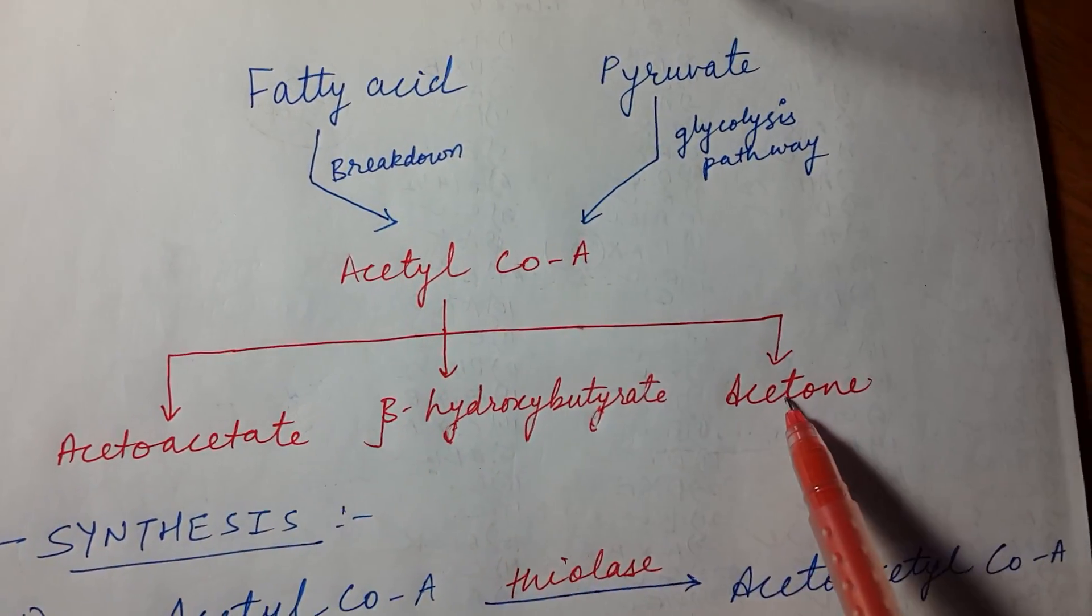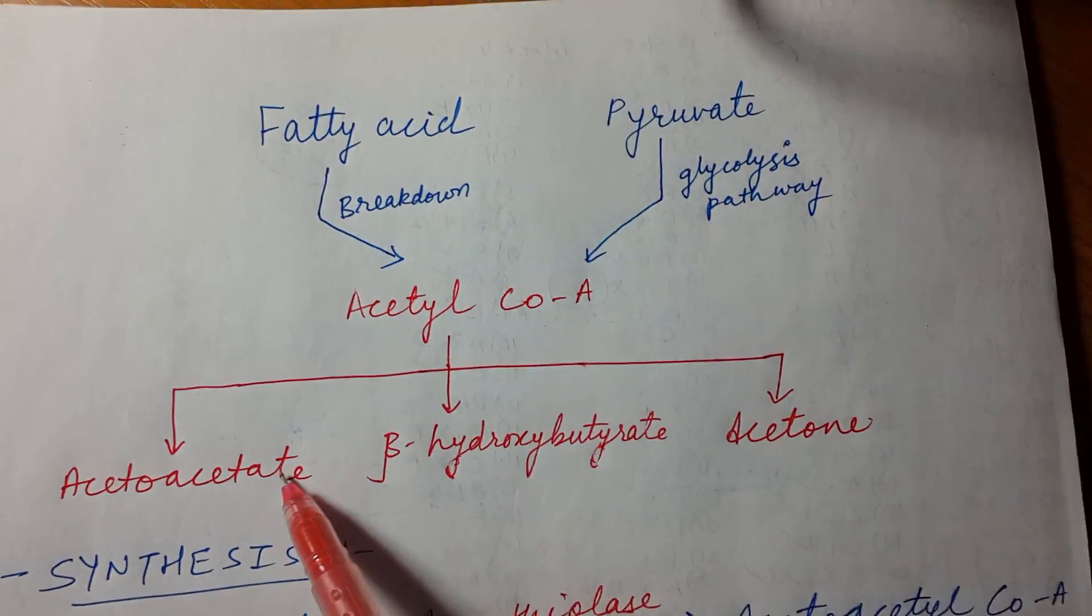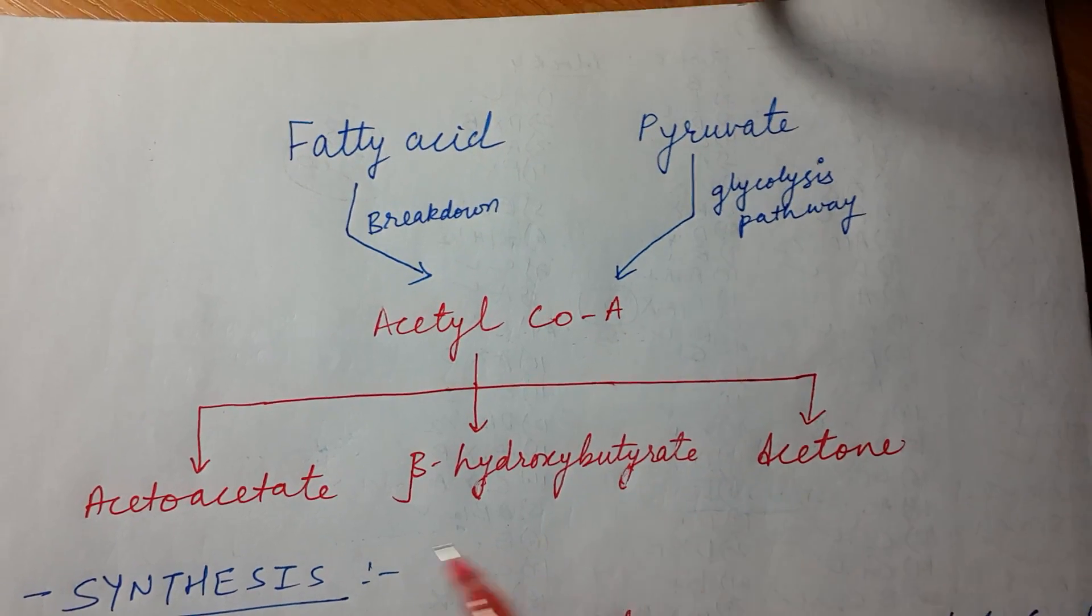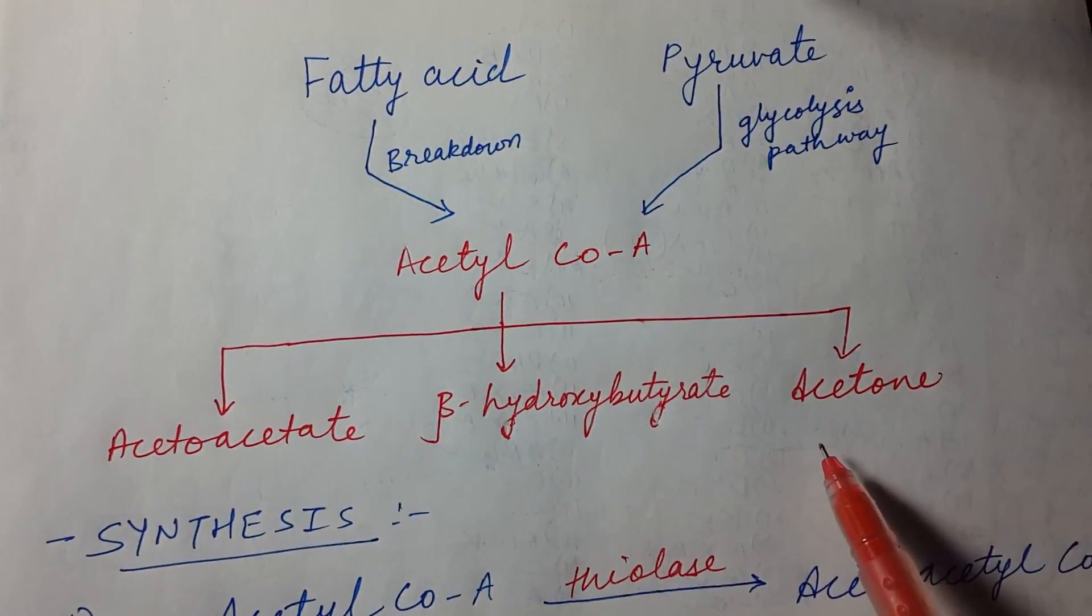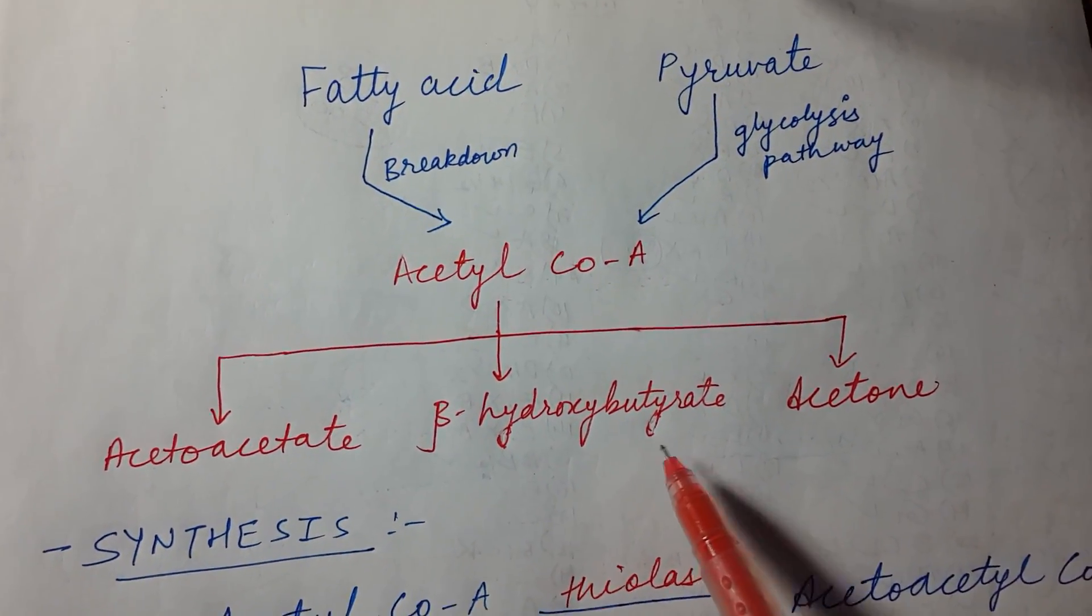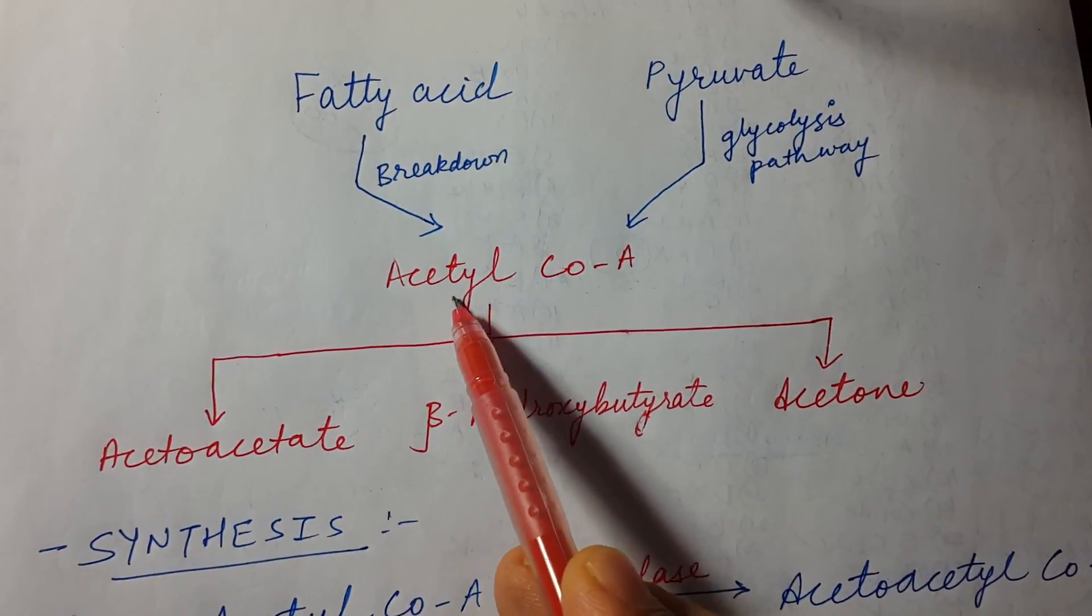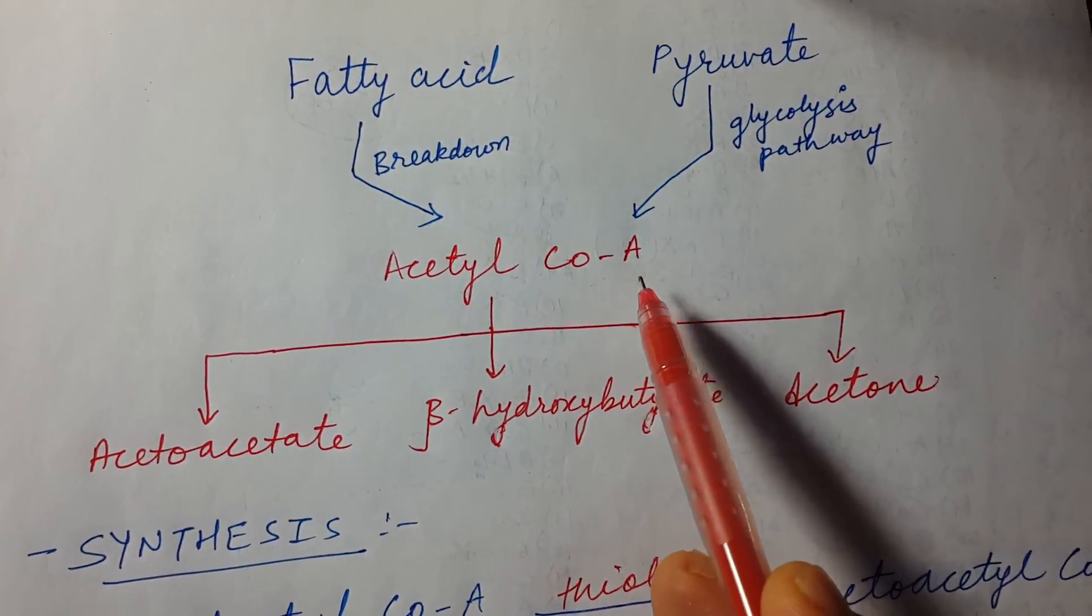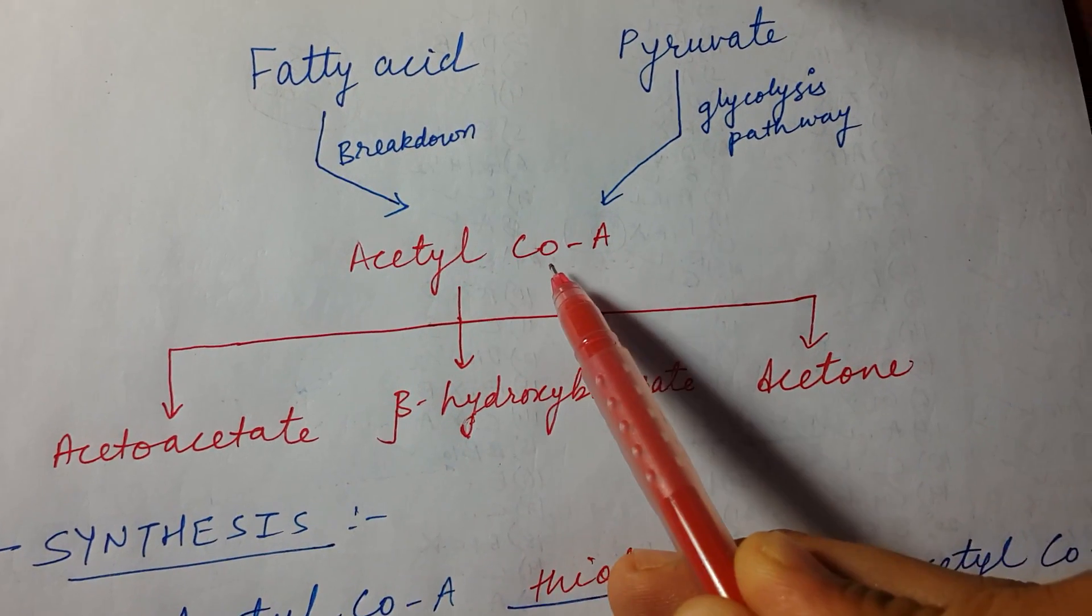See, these are three basic ketone bodies which we will discuss: acetoacetate, acetone, and beta-hydroxybutyrate. Now all three are formed from acetyl coenzyme A, and the main source of acetyl coenzyme A is pyruvate and fatty acid.